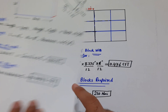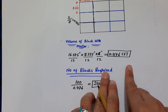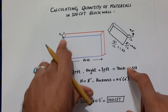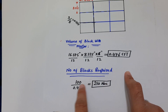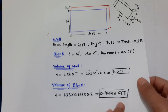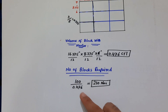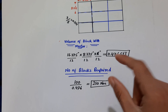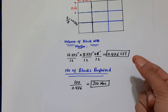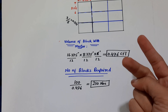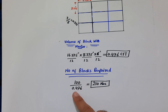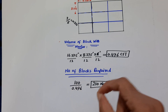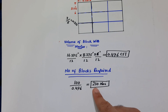Now, how many blocks are required to complete this wall with length 20 feet, height 10 feet, and thickness 0.5 feet? The number of blocks required equals the volume of the wall divided by the volume of one block with mortar. That is 100 ÷ 0.476, because we include the mortar to get the correct quantity. The result is approximately 210 blocks required to complete this wall.